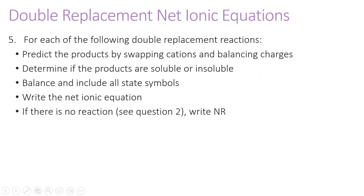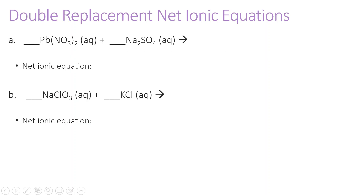For the next couple of questions, we're going to predict the products, determine if the products are soluble or insoluble, balance and include state symbols, write the net ionic equation, and if there is no reaction, write NR for no reaction. To solve this one, we need to first identify charges. This is a double replacement reaction, which means our cations are going to switch spots.